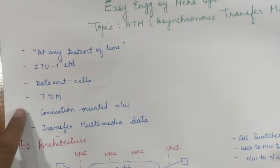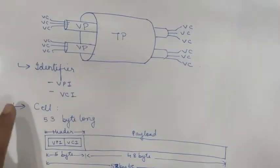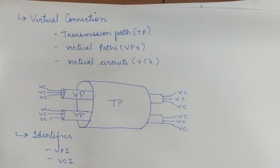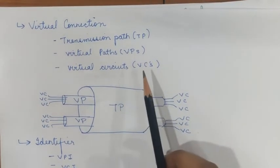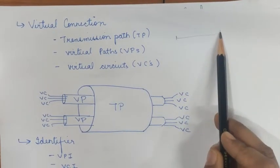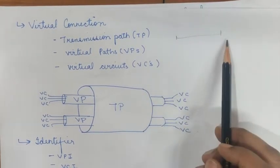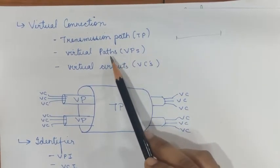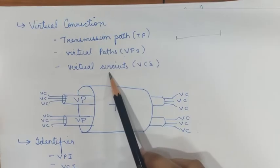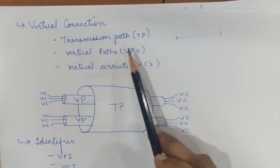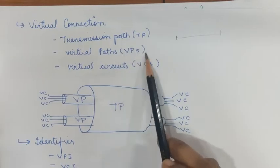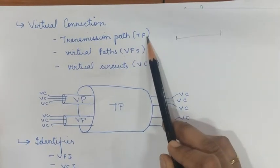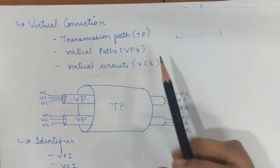One important concept in the architecture of ATM is the virtual connection. A connection between two endpoints is accomplished through a transmission path, a virtual path, and a virtual circuit. Let us understand what each of these means.